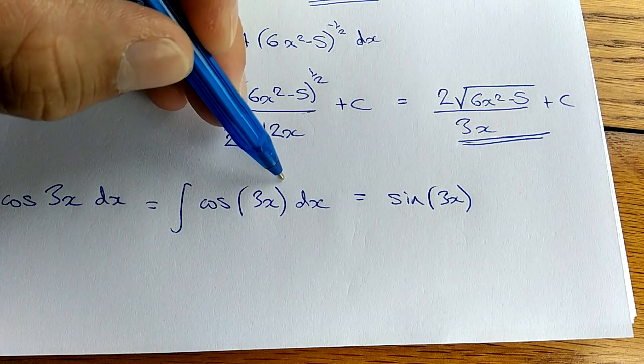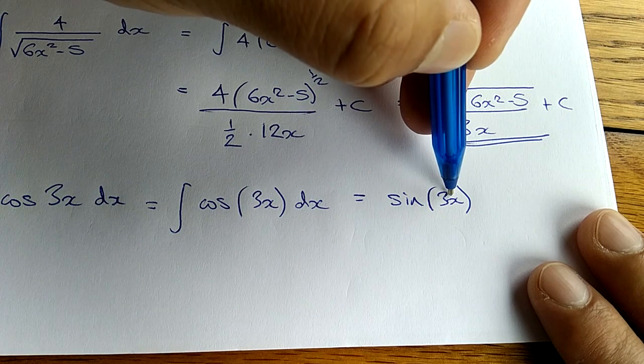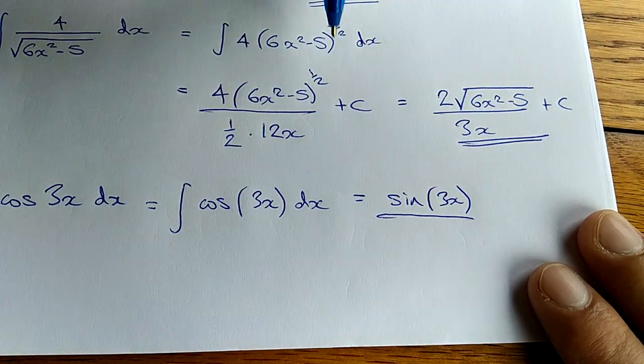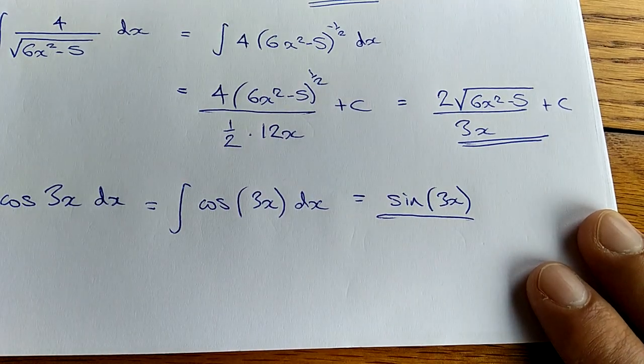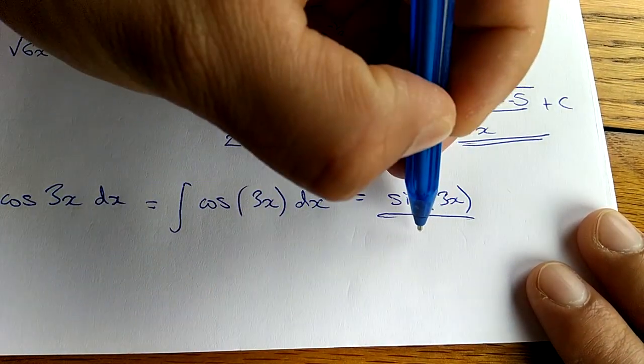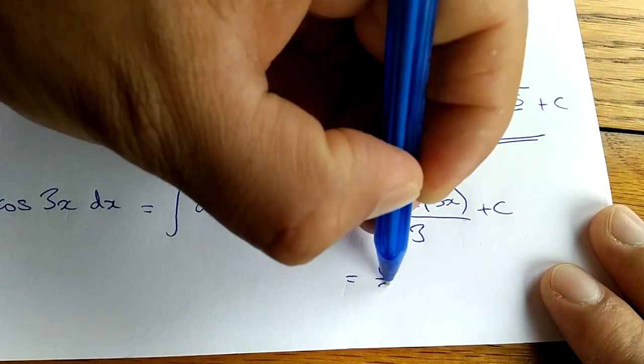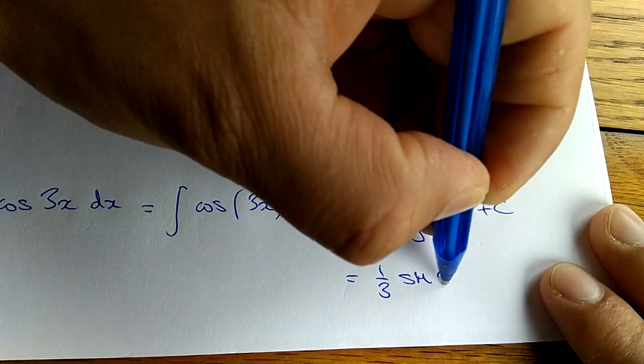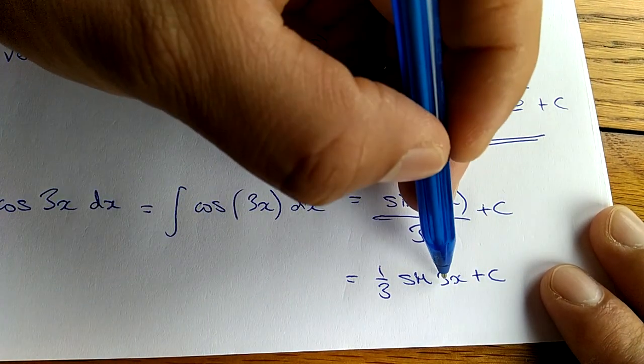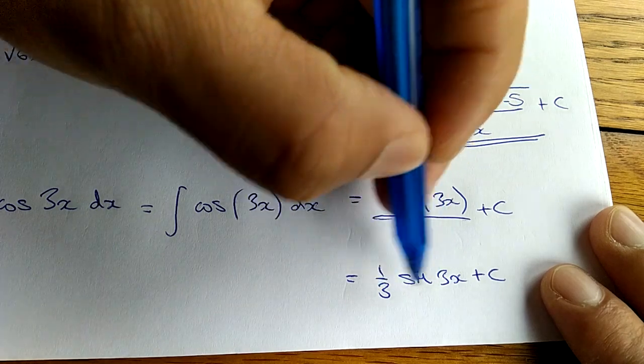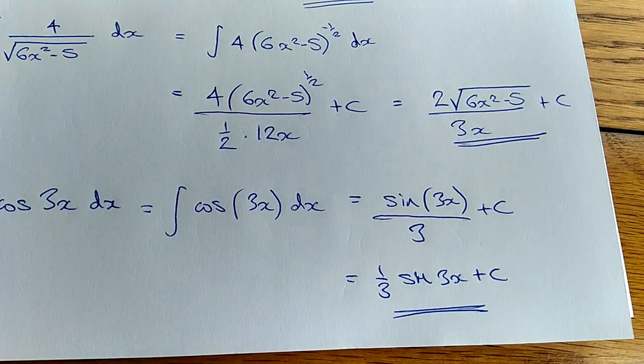So what you would not do is add a power or anything. That would be incorrect. Once you've integrated the outside, you now need to divide by the derivative of what's inside the brackets, and the derivative of 3x is simply 3. Don't forget the plus c. This can be rewritten as a third sin 3x plus c, or sin 3x over 3. It doesn't matter. What you cannot do is cancel these two 3s out. That would be incorrect. And that's it. Hope that was helpful.